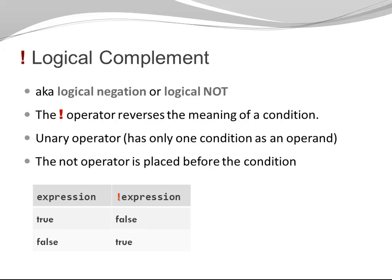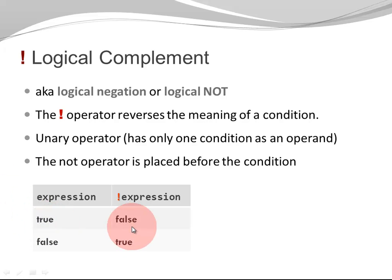Let's have a look at the logical complement, which looks like an exclamation mark. It's also called the logical negation, the logical NOT, or sometimes just the NOT operator. The NOT operator reverses the meaning of a condition: if my expression was TRUE, then NOT expression is FALSE, and if my expression was FALSE, then NOT expression is TRUE. NOT is a unary operator, meaning it has only one operand — a condition — and the NOT operator is placed before the condition.